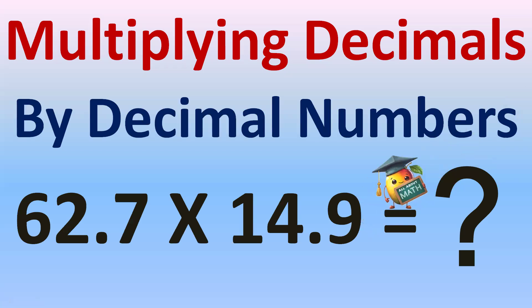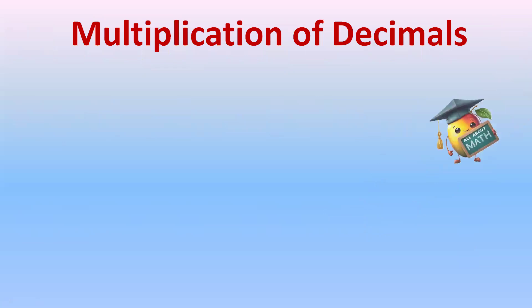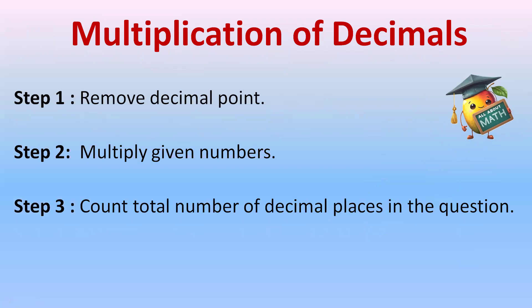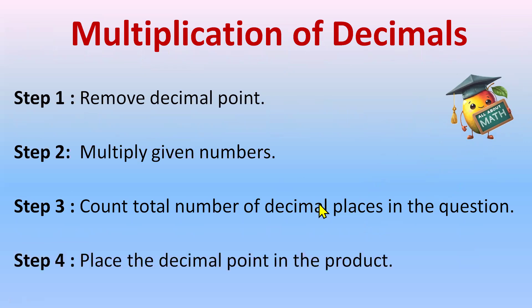Multiplying decimals by decimal numbers. For multiplication of decimals, step 1: remove the decimal point from the question, then multiply the given numbers without the decimal point. After that, count the total number of decimal places in the question and then place the decimal point in the product, or in the answer, at the end.